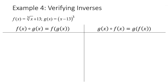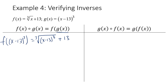Let's try it ourselves. We have f(x) = the cube root of (x + 13) and g(x) = (x − 13)³. For f ∘ g(x): substitute g(x) into f — f(g(x)) = the cube root of ((x − 13)³ + 13). The cube root and cube cancel, leaving x − 13 + 13. The −13 and +13 cancel, and we're left with x.